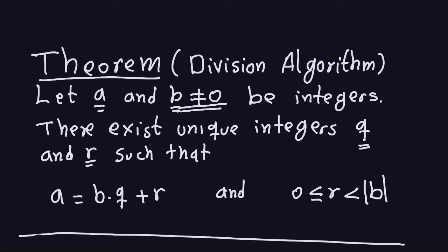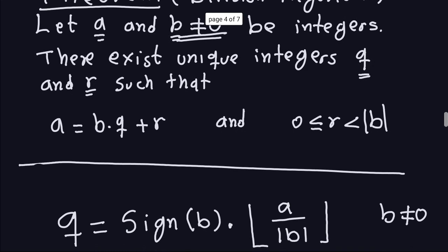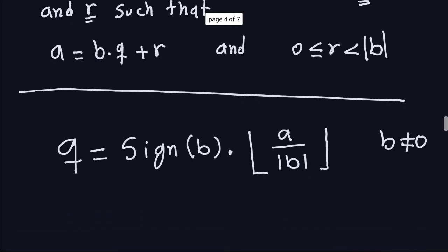Let's find Q first. We already mentioned how to find Q, and if you watched the video about how to find the quotient of two integers, you saw that we'll work with this formula: the sign of B times the floor of |A| divided by |B|, of course assuming that B is not equal to zero. This is the formula we're going to use to compute the quotient, and we can implement it in Java.